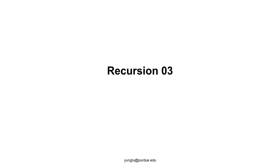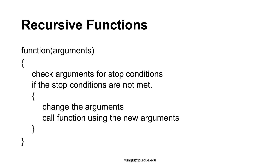In this lecture about recursion, we explain how recursive functions work. This is the typical structure of recursive functions. A recursive function has one or several arguments. Inside this function, it first checks whether the argument or arguments have met the stop condition or conditions. If the stop conditions are met, the function may perform some work to finalize the computation. If the stop conditions are not met, the function makes necessary changes to the arguments and calls the function again.